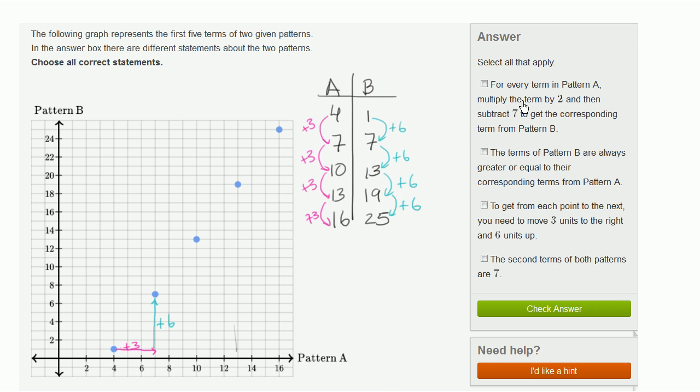For every term in pattern A, multiply the term by 2 and then subtract 7 to get the corresponding term from pattern B. So let's see if that holds up. So according to this, if this was true, I should be able to take this, multiply by 2, and subtract 7 and get that. So let's see, is 1 equal to 2 times 4 minus 7? So 2 times this number, 2 times 4 minus 7. Well, 8 minus 7 is equal to 1.